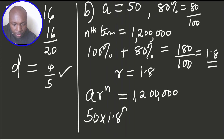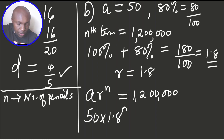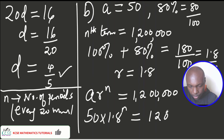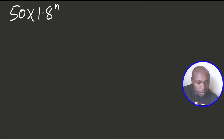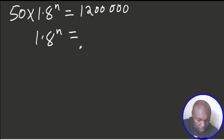Each period occurs every 20 minutes. Solving 50 × 1.8^n = 1,200,000: dividing both sides by 50 gives 1.8^n = 1,200,000 ÷ 50 = 24,000.